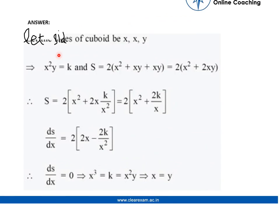So let's see, we have taken the sides of cuboid as x, x, y. So l·b·h, we have calculated the volume that is x²y because l and b are same over here.